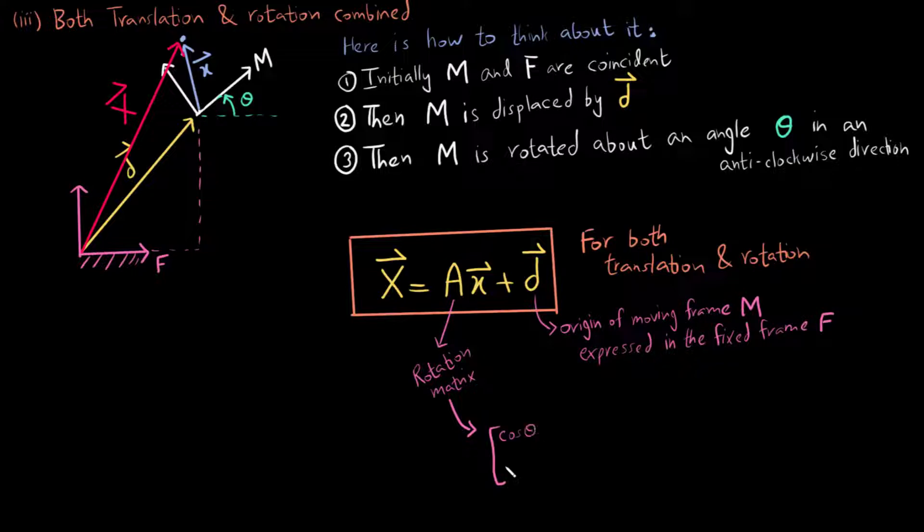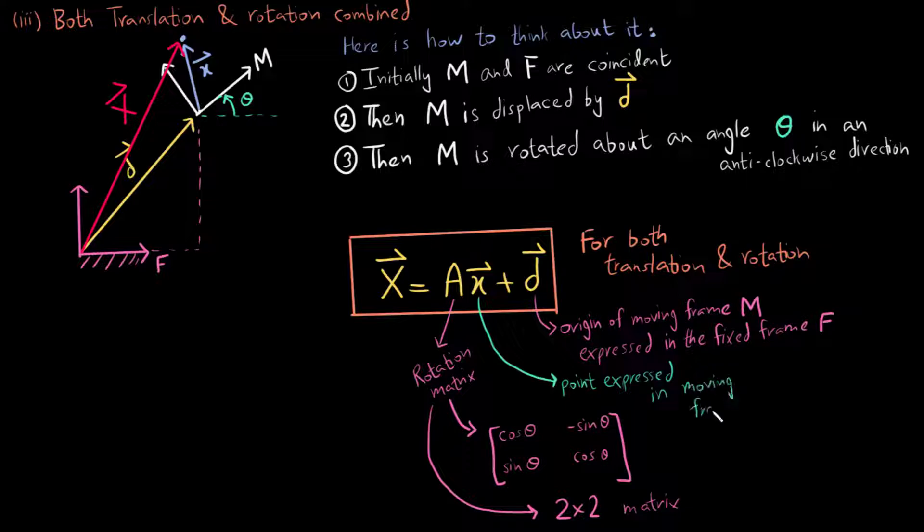A is the rotation matrix or the orientation matrix which is cosine of theta, sine of theta, negative sine of theta, cosine of theta, a 2 by 2 matrix. The small x is the point expressed in the moving frame and the big X is the same point expressed in the fixed frame.